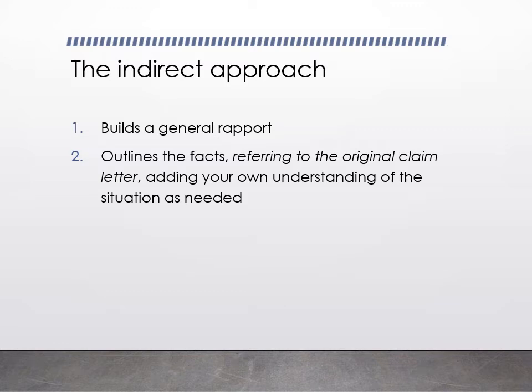You're going to briefly outline the facts. In the claim letter you chronicled events in detail, but in the adjustment letter you'll be a bit more brief — saying something like, 'I understand from your letter that A, B, and C happened.' This shows you're not just sending a form letter; you're responding to their specific letter. It also gives you a chance to add your own understanding, and correct any misunderstandings if the facts are wrong.